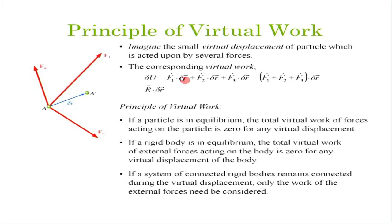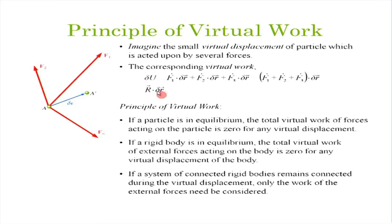By the commutative property of the dot product, we can factor out δr, giving (F1 + F2 + F3)·δr. This is the resultant force R. So virtual work is simply R·δr, where R is the resultant of all forces and δr is the virtual displacement.